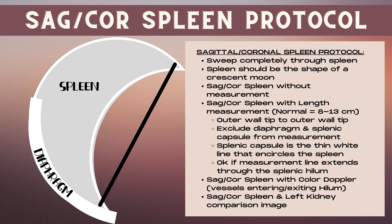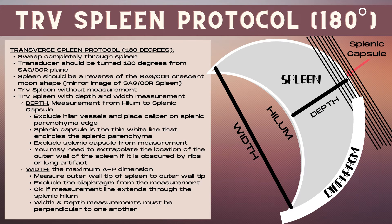When measuring tip to tip in the spleen, it's okay if the measurement line extends through the splenic hilum. Also take a sagittal or coronal image of the spleen with color Doppler to demonstrate the vessels entering and exiting the hilum of the spleen, and then a sagittal or coronal image demonstrating the spleen and the left kidney in the same image for comparison.